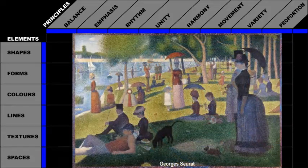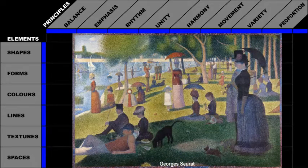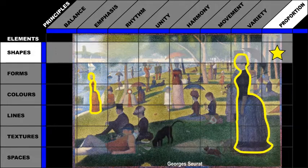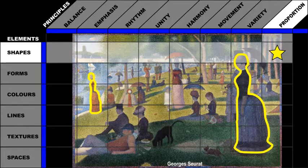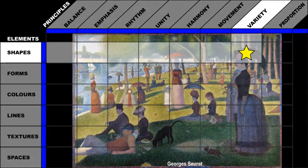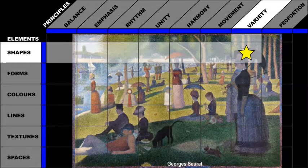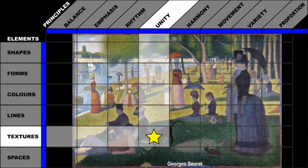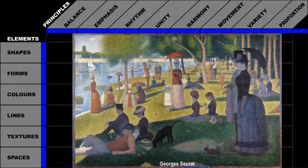Let's take a look at how Georges Seurat used elements and principles of design. He created a feeling of depth by reducing shapes proportionally as they recede in space. He created interest by using a variety of shapes for the people in his painting. Georges Seurat is well known for his tiny brush strokes called pointillism. This texture is used consistently throughout his painting. Therefore, Seurat used the principle of unity.